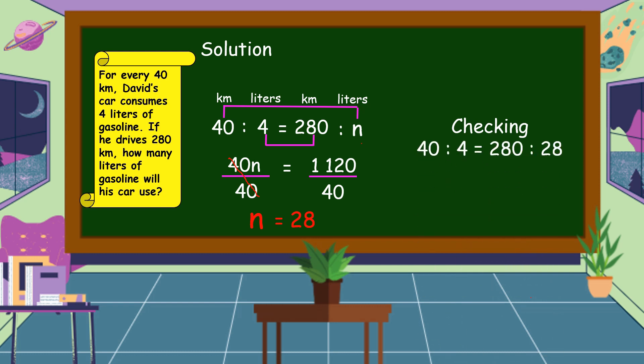We're going to check if our answer is correct or not. We're going to substitute the value of N into the proportion. 40 is to 4 is equal to 280 is to 28.